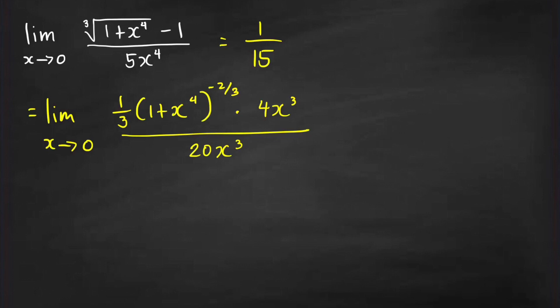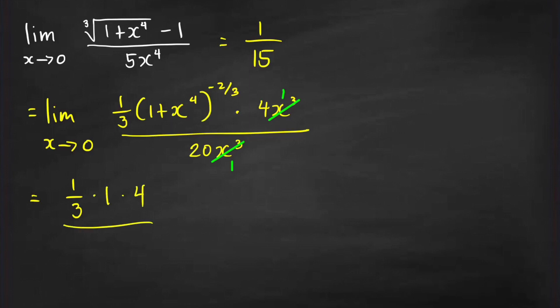Before we evaluate the limit, we have to cancel the common factor first. We can cancel x cubed from both numerator and denominator, replacing them by 1. Now we can already evaluate the limit. The limit is equal to 1 third times 1 raised to negative 2 thirds — which is just 1 — times 4, all over 20. And since 20 equals 4 times 5, it is clear that this is equal to 1 over 15.